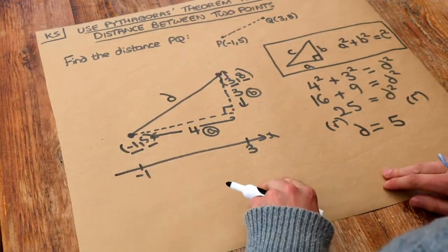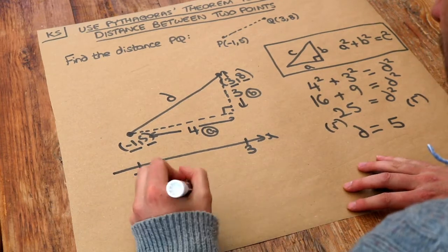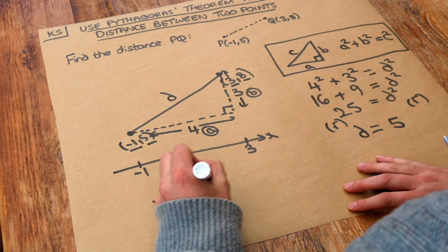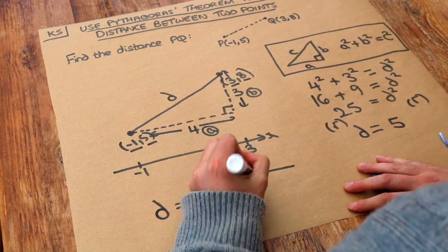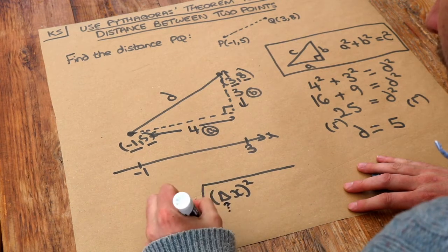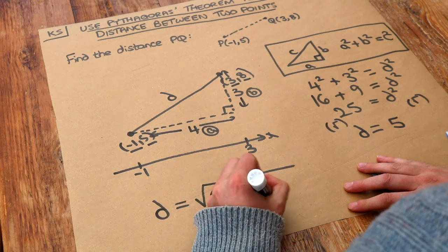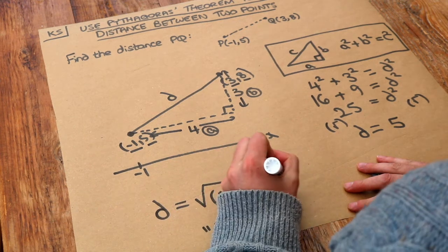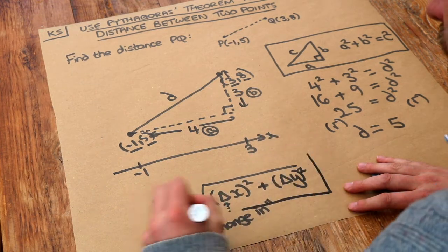Now, more generally, we can use a formula to do exactly what we just did. And basically, the distance between two points, when you've got the coordinates, is the square root of the change in X squared. That triangle symbol there is the Greek letter delta. That just means change in... So it's a change in X squared plus the change in Y squared. So that's the key formula that you can just memorize.